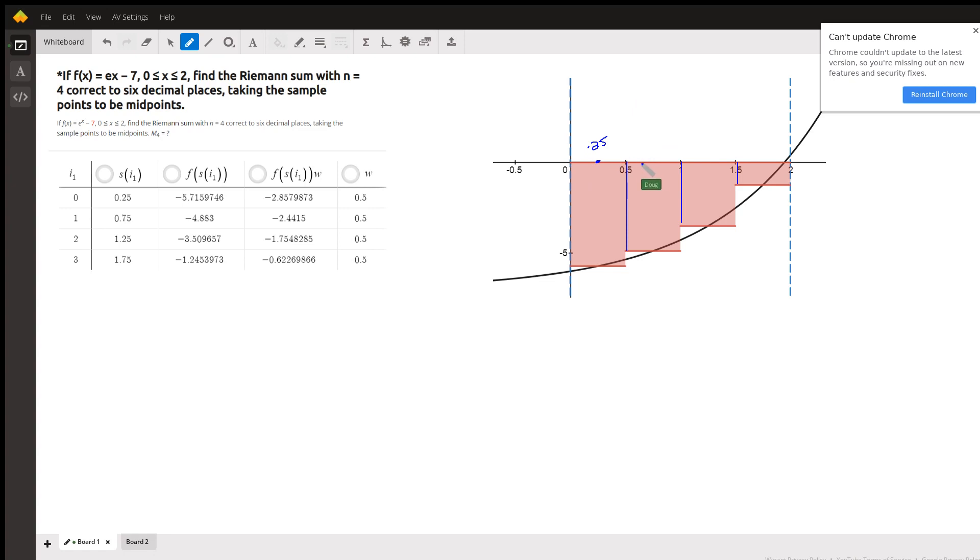That means that the width of each little rectangle or sub-interval will be 2 minus 0 divided by 4 because we're supposed to use 4 rectangles. So the width of each sub-interval is 1 half. That's what these are right here.